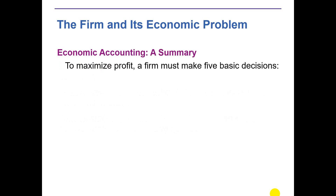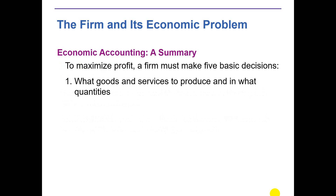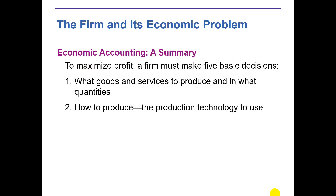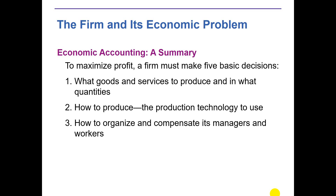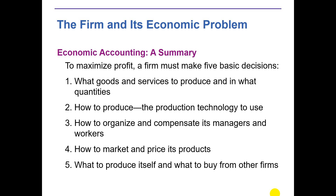To maximize profit, a firm must make five basic decisions. Number one: what goods and services to produce and in what quantity. Number two: how to produce — the production technology to use. Number three: how to organize and compensate its managers and workers. Number four: how to market and price its product. Number five: what to produce itself and what to buy from other firms.